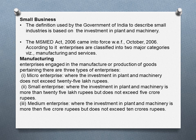According to this Act, small business is defined on the basis of investment made in plant and machinery. Three kinds of enterprises are defined: micro, small, and medium — both in the context of production of goods and services. In manufacturing, micro enterprises are those where capital investment in plant and machinery does not exceed 25 lakh rupees. For small enterprises, investment exceeds 25 lakh but does not exceed 5 crore rupees. For medium enterprises, investment is more than 5 crore.